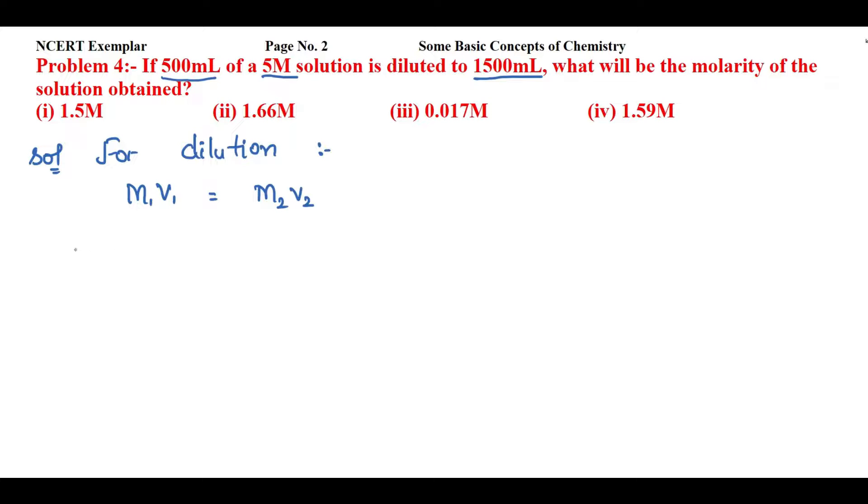Let's see the given values. First of all, I am having molarity 1, so molarity 1 is 5 molar and volume 1 is 500 mL. Now let's see the molarity 2 that we have to find, and V2 (that means volume 2) is 1500 mL.